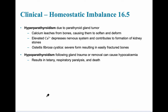Hyperparathyroidism causes a weak skeletal system because calcium leaches from the bone, softening and deforming the bones. It also contributes to kidney stone formation due to excess calcium in the kidney tubules. A severe form of hyperparathyroidism leads to osteitis fibrosa cystica, resulting in easily fractured bones. Hypoparathyroidism, on the other hand, results in tetany, respiratory paralysis, and potentially death.